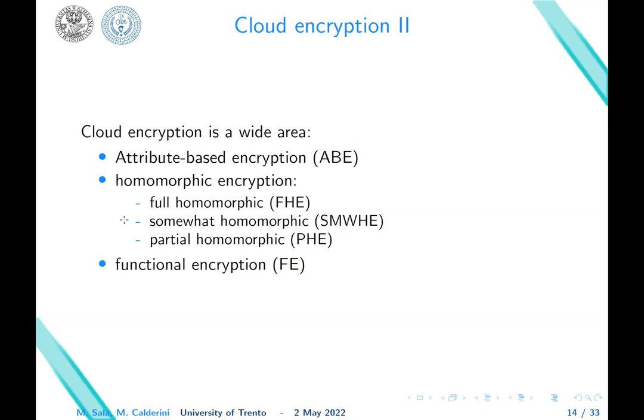Actually, cloud encryption is a name for a wide area. We can distinguish at least three main areas: first, the so-called attribute-based encryption; homomorphic encryption, which itself is divided into full homomorphic encryption (FHE), somewhat homomorphic encryption, partial homomorphic encryption; and then functional encryption (FE). We will have a look at each of these now.